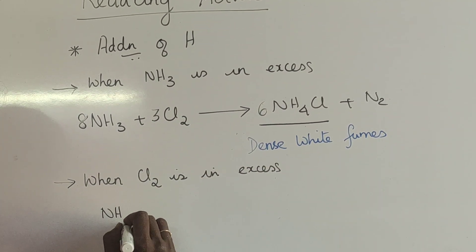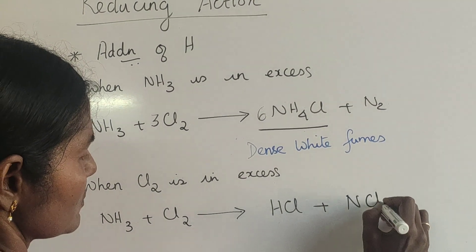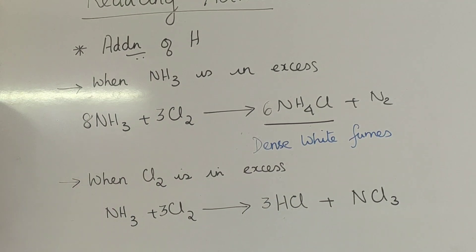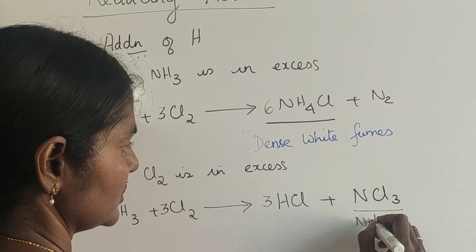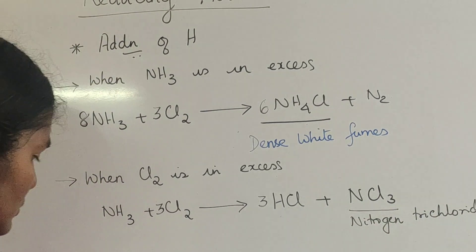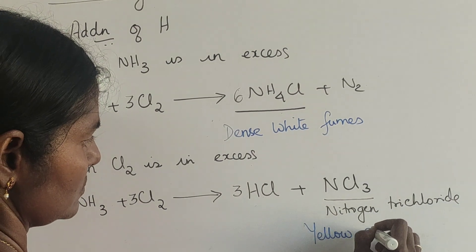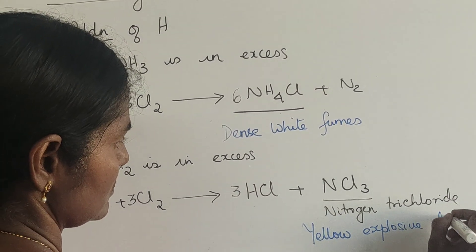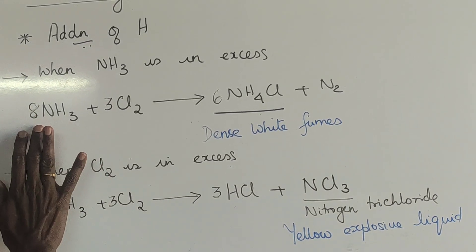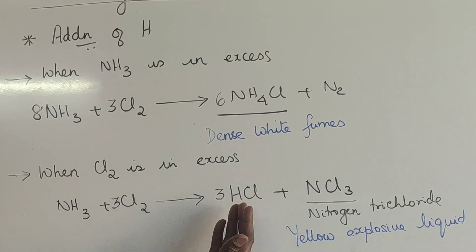Again ammonia reacts with chlorine. This time it produces hydrogen chloride and nitrogen trichloride as products, balanced as NH3 with 3Cl2 giving NCl3 and 3HCl. Nitrogen trichloride is a yellow explosive liquid. These are the two ways ammonia can react with chlorine: when ammonia is in excess, you get ammonium chloride and nitrogen with dense white fumes; when chlorine is in excess, you get nitrogen trichloride and hydrogen chloride.